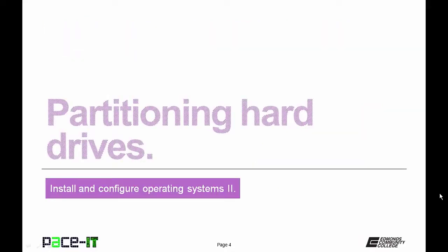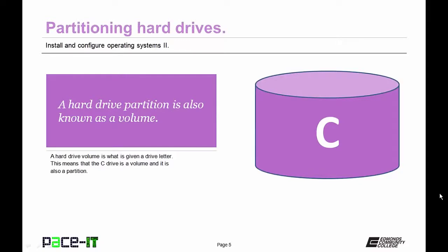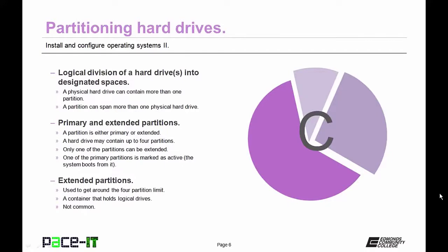A hard drive partition is also known as a volume — a hard drive volume is what is given the drive letter, so the C drive is a volume and a partition. Partitioning involves the logical division of a hard drive into designated spaces. A physical hard drive can contain more than one partition; a partition can span more than one physical hard drive. A partition is either primary or extended; a hard drive can contain up to four partitions, only one of which can be extended. One of the primary partitions is marked as active — that's where the system boots. An extended partition is used to get around the four-partition limit by acting as a container to hold logical drives.